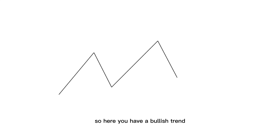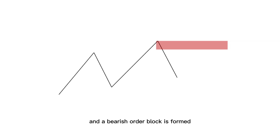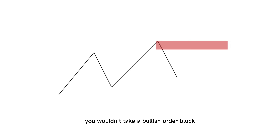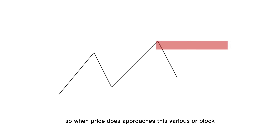One of the simplest fake order blocks is your counter trend. Here you have a bullish trend — price is making higher highs and a bearish order block is formed. Why wouldn't you take this bearish order block? Because the trend is bullish. And same thing, if the trend was bearish, you wouldn't take a bullish order block because you're going against the trend. So when price does approach this bearish order block, you'll more than likely continue the bullish trend.